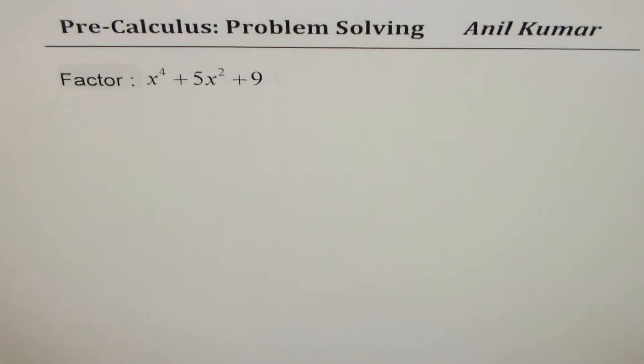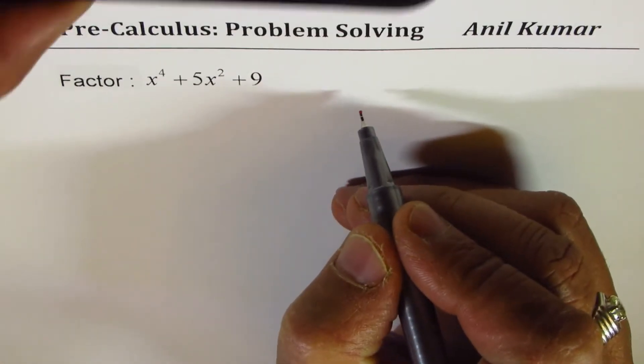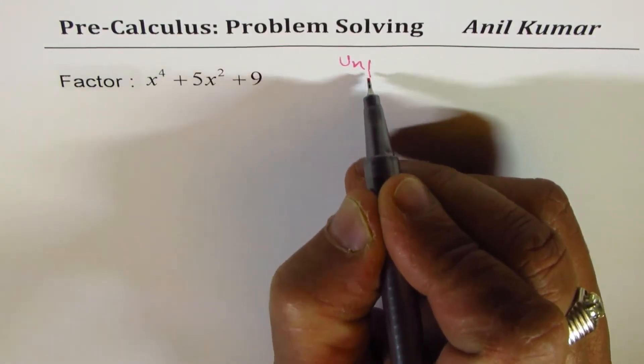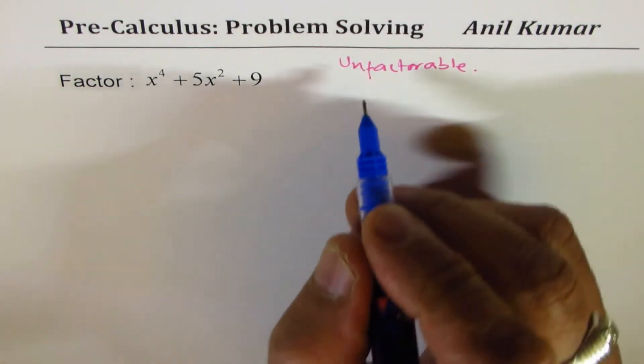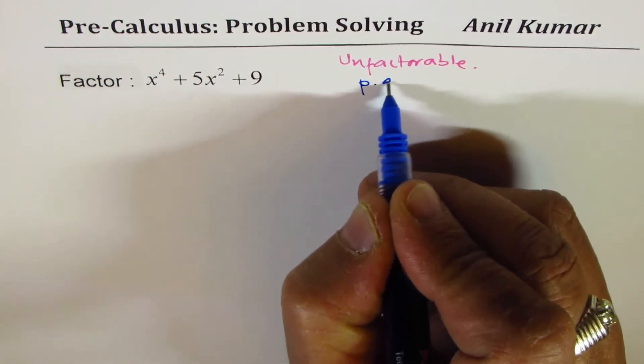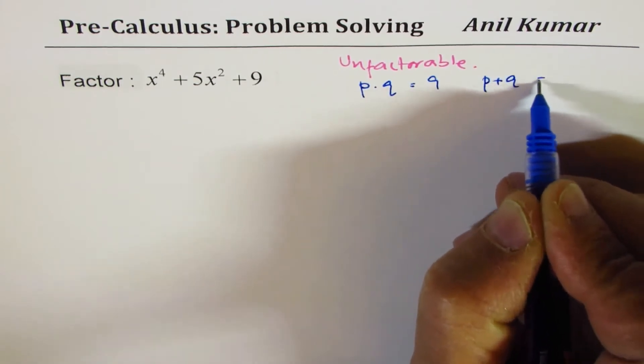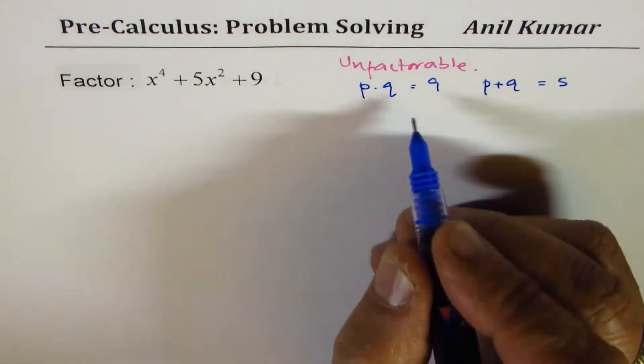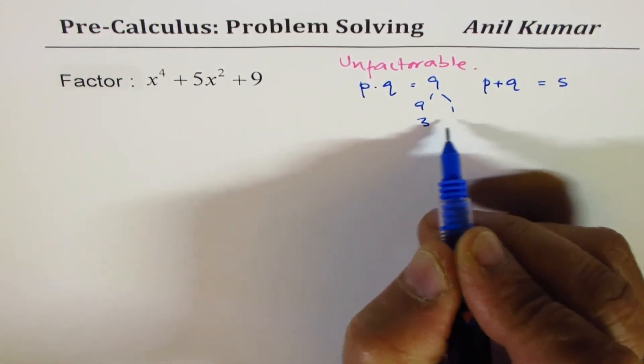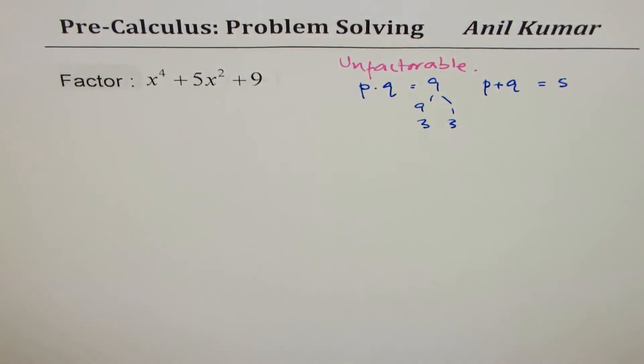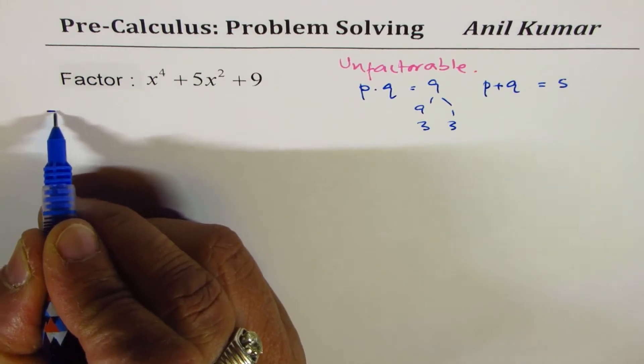Now this is classified under unfactorable. The reason is, why do we say that this is unfactorable? We say it is unfactorable because we're looking for two numbers whose product should be 9 and whose sum should be 5. We don't have - 9 you could get 9 × 1 but sum is not 5. You could get 3 × 3 but the sum is not 5. So that makes it unfactorable. Now the question is, we need to factor it. How can we do it?